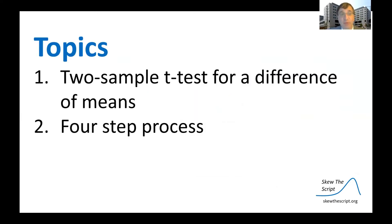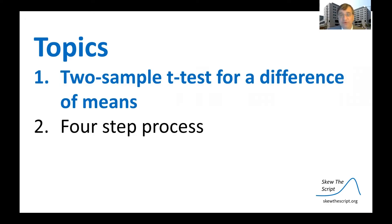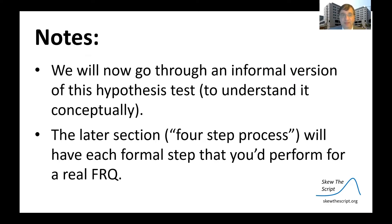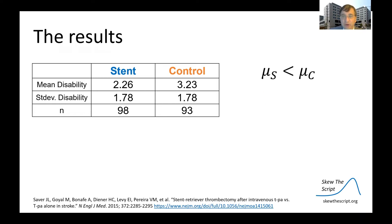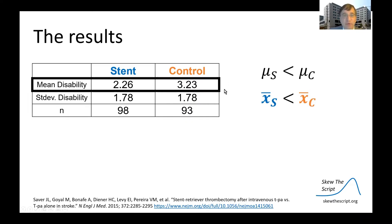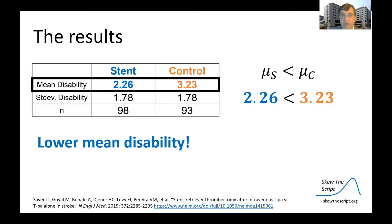Today's topics will begin with the two-sample t-test for a difference of means. We'll go through an informal version of this hypothesis to understand it conceptually, and later the formal four-step process will be reviewed. Here are the results: if the stents work, the treatment group should have a lower average disability score. The disability score in the stent group was 2.26; in the control group, 3.23.